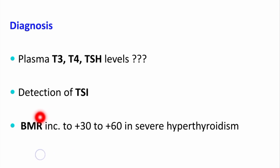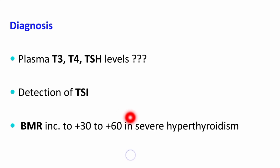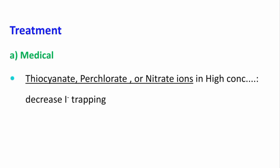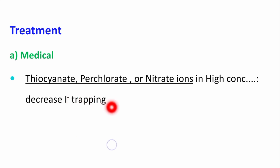If we measure the BMR in such a patient, it may be plus 30 or plus 60 in severe hyperthyroidism. Treatment can be medical, surgical, or radioactive iodine. Regarding medical treatment, thiocyanate, perchlorate, or nitrate ions given in high concentrations decrease iodide trapping and thereby decrease the synthesis of thyroid hormone.